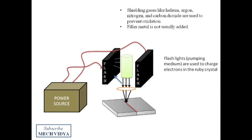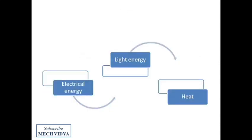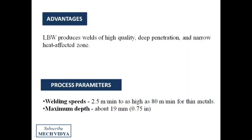So basically to summarize, here we convert the electrical energy to light energy and finally to heat energy to melt the faying edges. Welding speed of various ranges can be obtained up to a depth of say 19 to 20 mm. One good thing about the laser beam welding is that it produces high quality weld with high penetration and due to these advantages it has widespread application in various sectors.